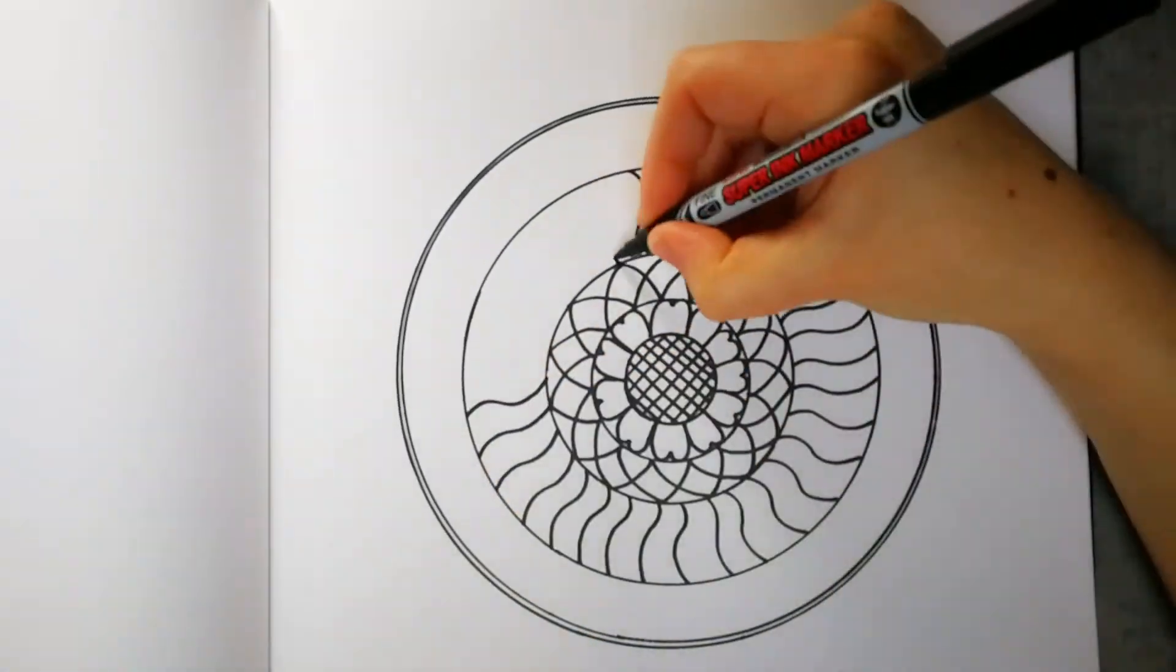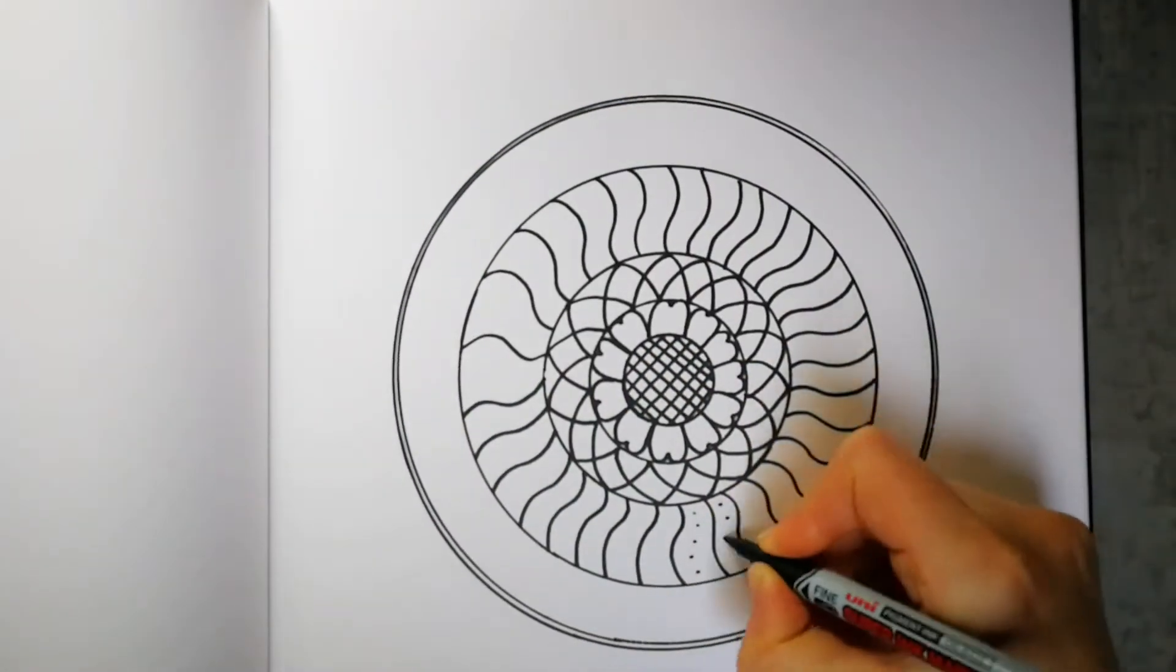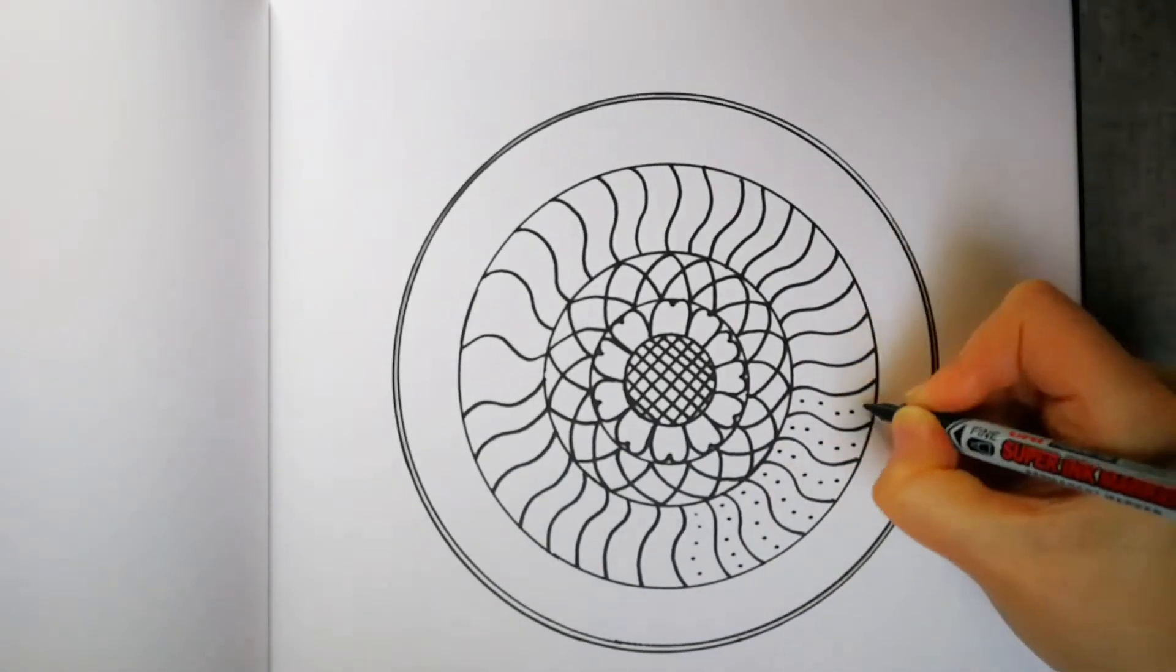It's easier to get an even pattern if you turn the paper as you go and your hand's always moving in the same direction. But I didn't want to make you all dizzy.